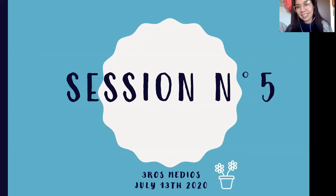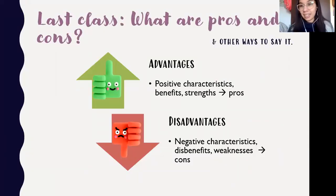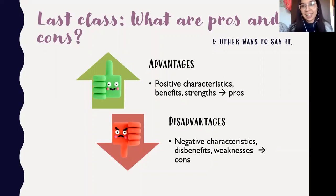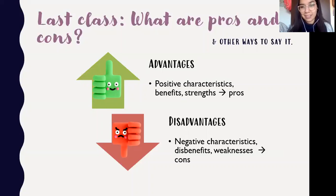Hello everyone, today we're going to review what we did on our last session on Monday. The objective was to review pros and cons in different texts and situations, and we also reviewed instructions for worksheet number one from this unit. We've been seeing and discussing pros and cons — the advantages or disadvantages that different situations or topics can have. Other ways to say this are positive characteristics, benefits — in Spanish: ventajas, beneficios, fortalezas. On the other hand, we have the disadvantages — the negative characteristics, also known as weaknesses or cons.